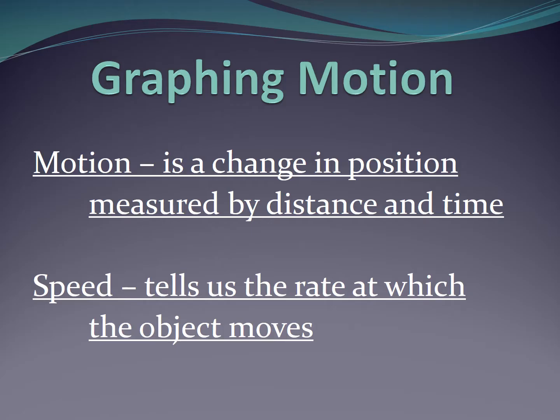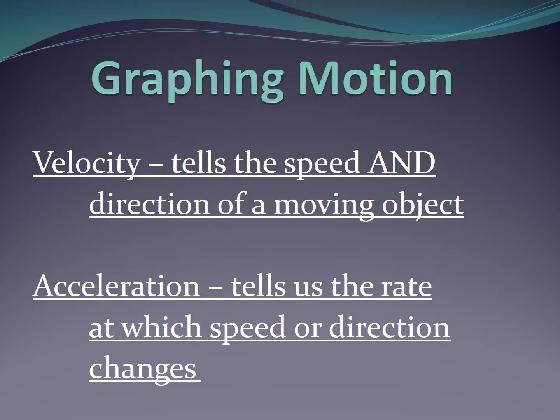To review some topics, we know that motion is a change in position measured by distance and time. Speed tells us the rate at which that object moves. We've been able to tell on a graph what that looks like. Velocity tells us the speed and the direction that it's moving in, while acceleration tells us the rate at which it is moving. Acceleration will be shown on a graph differently as well.